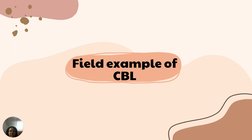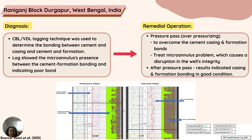Next, we look at a field example of using the CBL. The field discussed is the Rani Kanch block, Nurkapur, located in West Bengal, India. For the diagnosis, they used the cement bond log together with the variable density log to determine the bonding between cement and casing, and the bond between the cement and formation. For the remedial action, they performed a pressure pass, which involves overpressuring to overcome cement, casing, and formation damage, and to treat the microannulus problem. The diagram shows the cement bond log with the variable density log before and after the pressure pass.